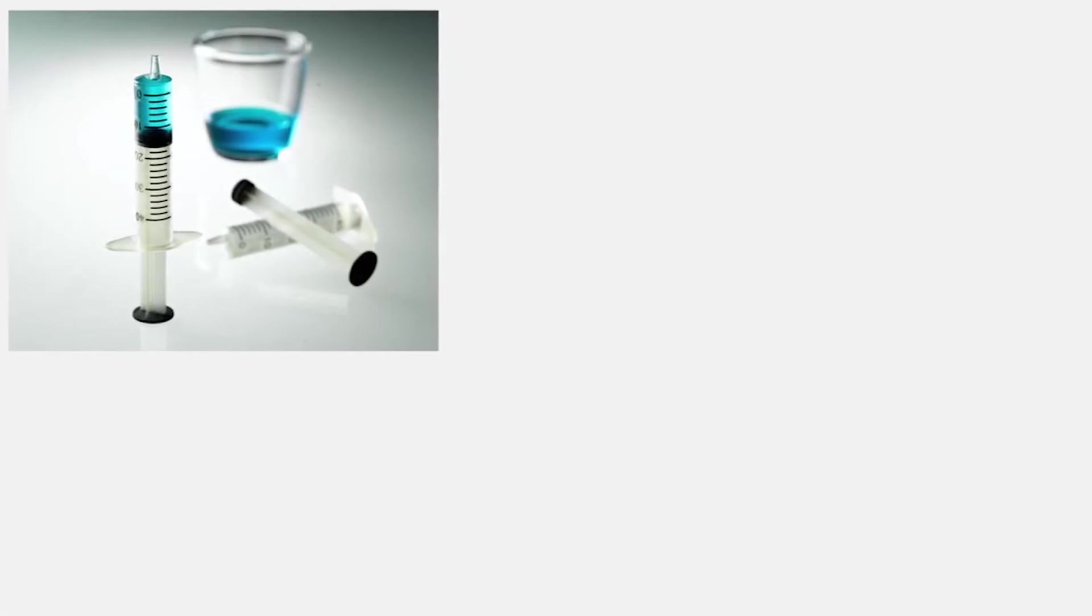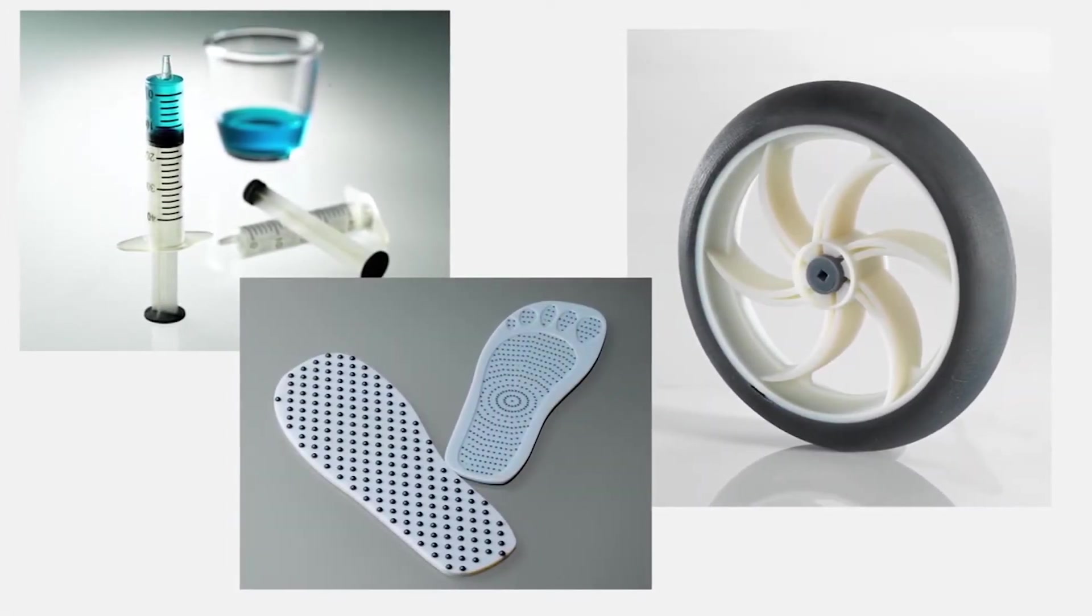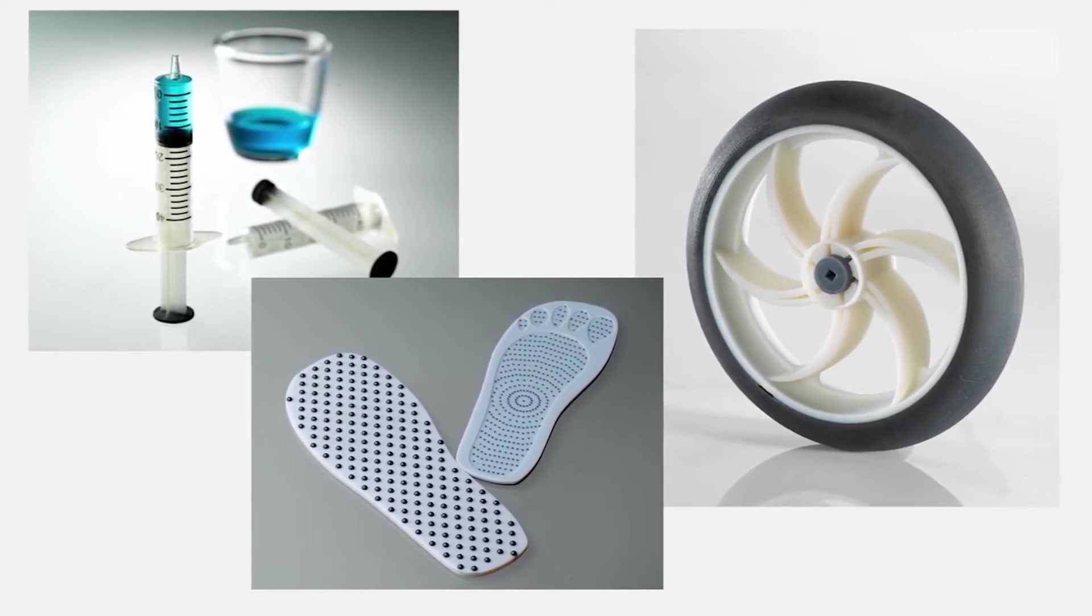Companies use multi-material 3D printing to simulate rubber products like gaskets, tires, and footwear soles with digital materials that range from as soft as a rubber band to as hard as a shopping cart wheel.